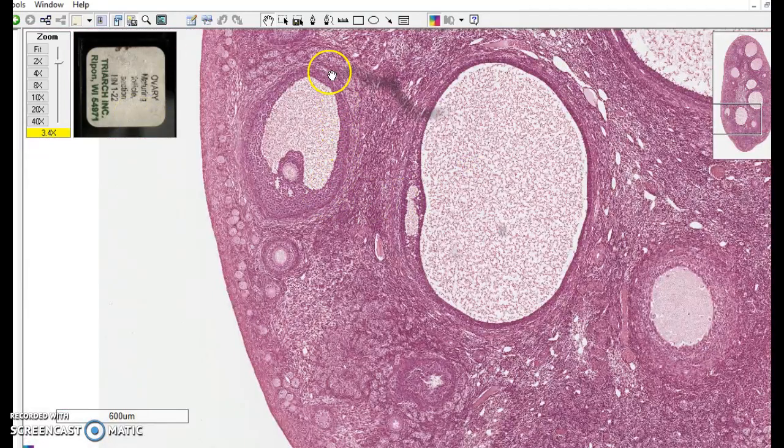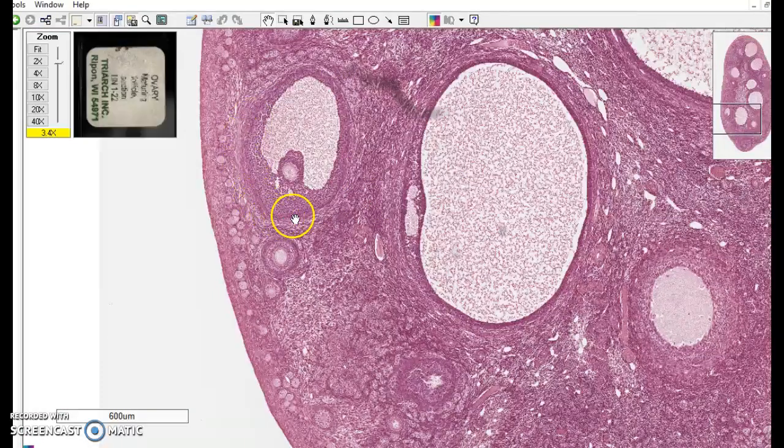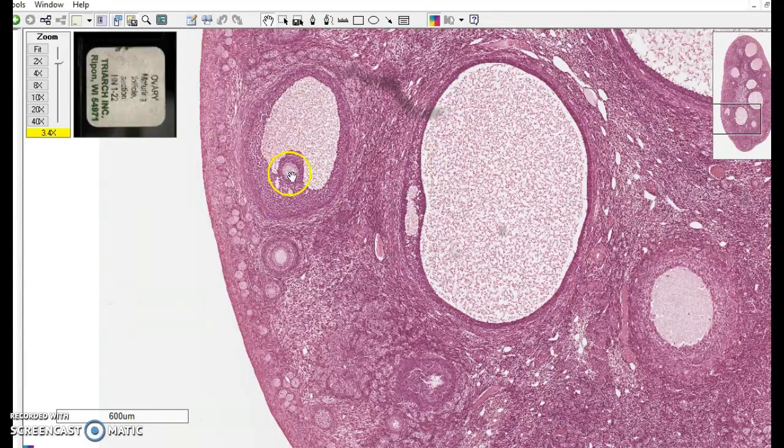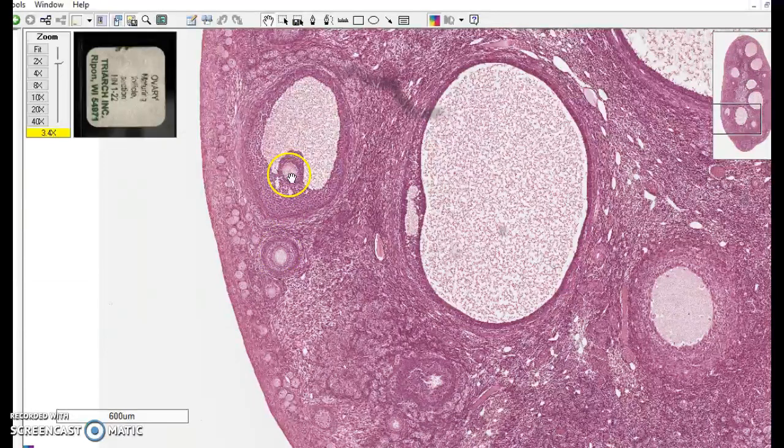Here is a basement membrane. This structure is called a follicle. This large cell in the center of that, you see another one down here in a less mature follicle, is an egg. That's the human egg.